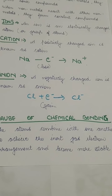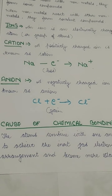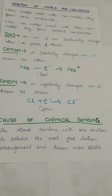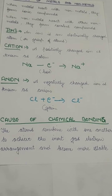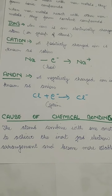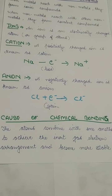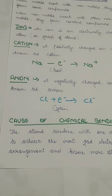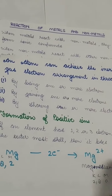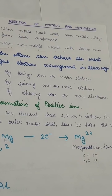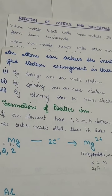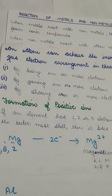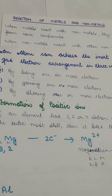Now what is the cause of chemical bonding? The cause of chemical bonding is to attain the nearest noble gas configuration. Atoms combine with one another to achieve the inert gas electronic arrangement and to become more stable, because these noble gases are stable. An atom can achieve the inert gas electronic arrangement by three ways: either by losing one or more electrons like a metal does, either by gaining one or more electrons like a non-metal does, or by sharing - which is done by carbon and many other non-metals, and we are going to study that in the next chapter.